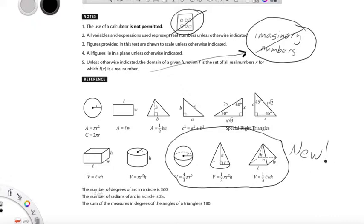And then also here the number of degrees of arc in a circle is 360. The number of radians of arc in a circle is 2 pi. The sum of the measures of degrees of the angles of a triangle is 180.